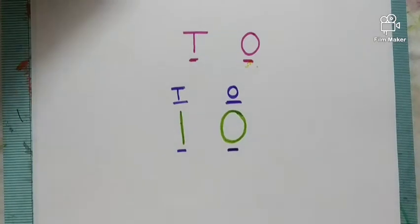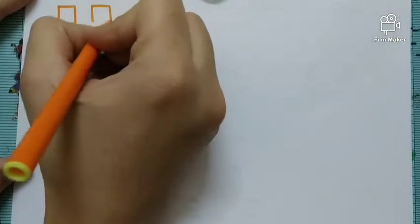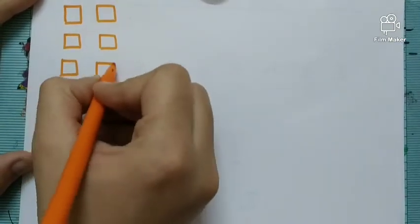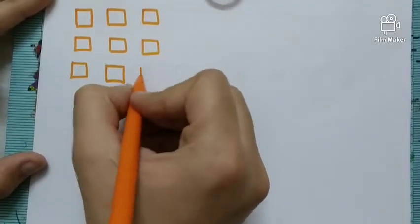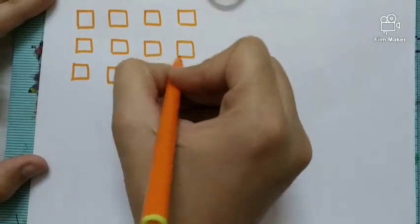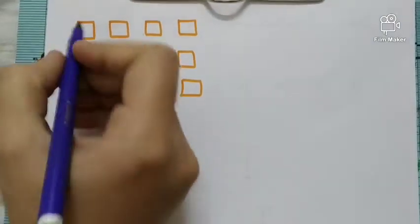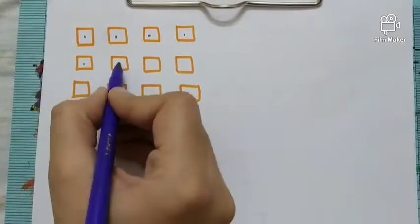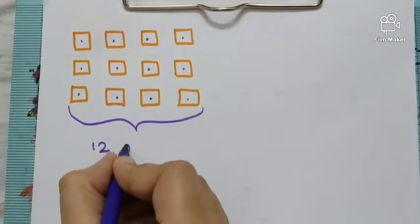Now see, if we make a group of 10, it will be easy for us to count. So, this is 12 one's. 1, 2, 3, 4, 5, 6, 7, 8, 9, 10, 11 and 12. These are 12 one's. Yeh kya hai hai humare paas? 12 one's.